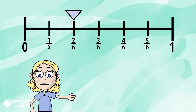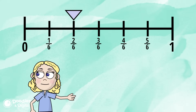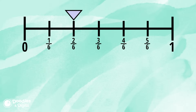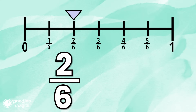Let's look at a few more fraction number lines. What's similar about all these fraction number lines? What's different? Let's look at this one. Between zero and one it is cut into sixths. So now we're going to see where the arrow is. We're going to make two jumps and we'll get to two sixths.